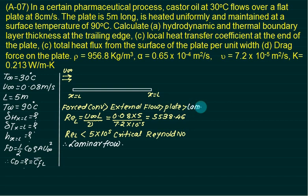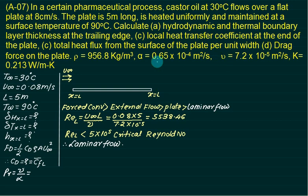From the laminar flow table, we find the relation for delta_hx. But before that, we calculate the Prandtl number, which is nu divided by alpha. Nu is 7.2 × 10⁻⁵ and alpha is 0.65 × 10⁻⁷, so Prandtl number equals approximately 1.1.